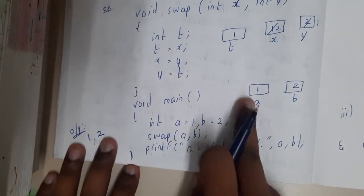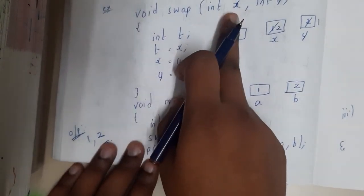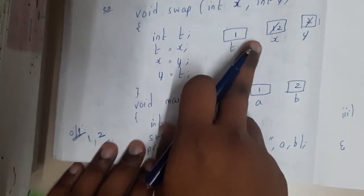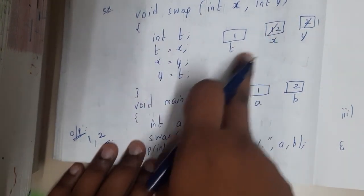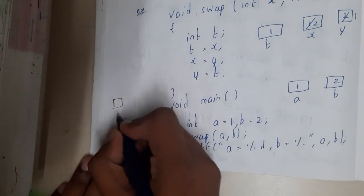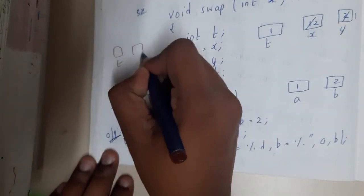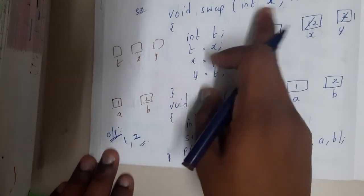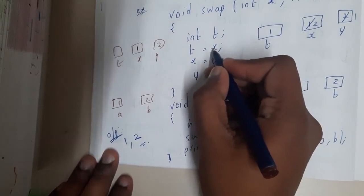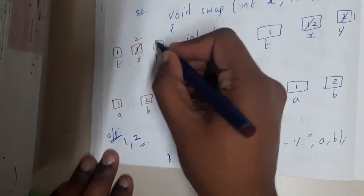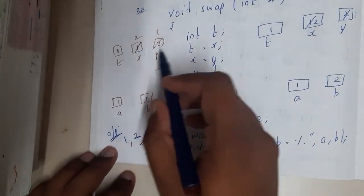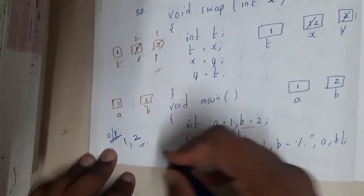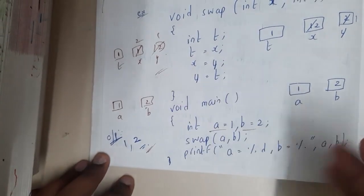Initially a is 1 and b is 2. When calling swap, x gets a's value (1) and y gets b's value (2). Using the temporary variable t, you store x (1) in t, assign y (2) to x, and t (1) to y — so x and y are swapped inside the function. But you are printing a and b only, which remain 1 and 2, not 2 and 1. Hence swapping is not possible with call by value — r-value is passed.